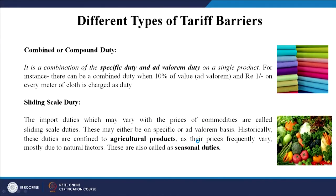For example, a one-page letter written by Mahatma Gandhi in the 1930s or 40s, or a letter from Einstein with his formulas, would be so costly that you cannot equate it through weight and size. Some other types of tariff barriers include combined or compound duty — a combination of specific and ad valorem duty on a single product — for example, 10 percent of value plus 1 rupee on every meter of cloth.